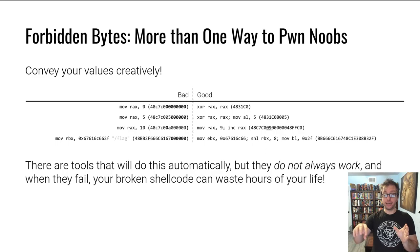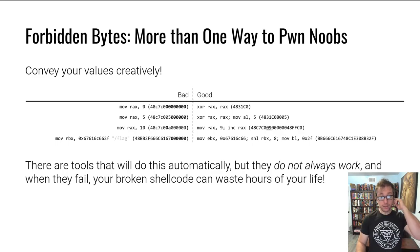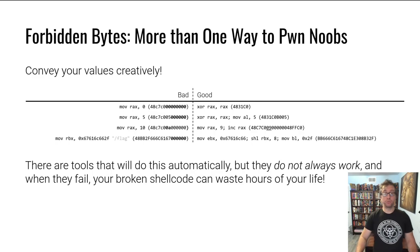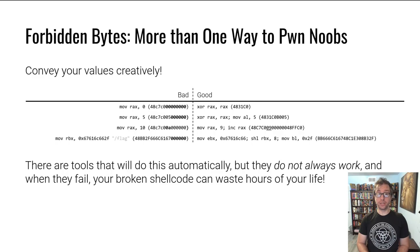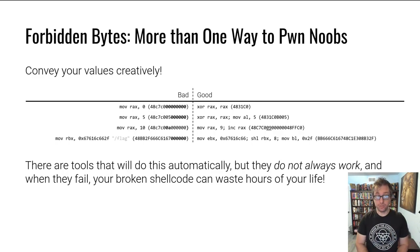You move 5 into AL so that RAX has just 0x0000000000000005. Very simple. Now let's say you're trying to avoid not zeros but a newline, and you want to move 10 into RAX. Ten, also known in hexadecimal as 0x0A, is the newline character in ASCII. So this is a big problem — if you have a scanf or similar injection method, it will terminate the read on that newline.